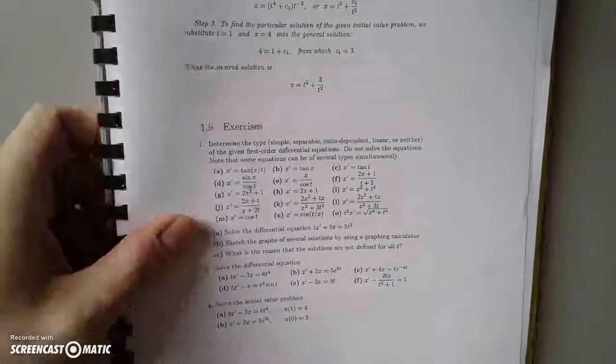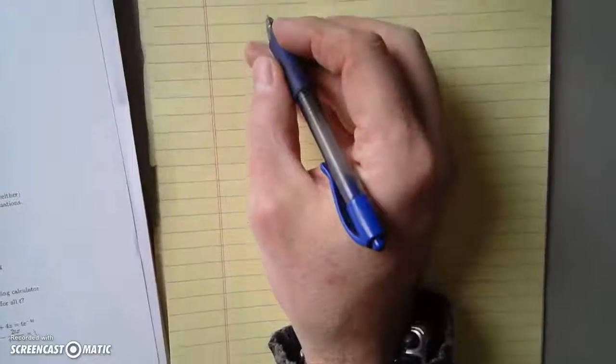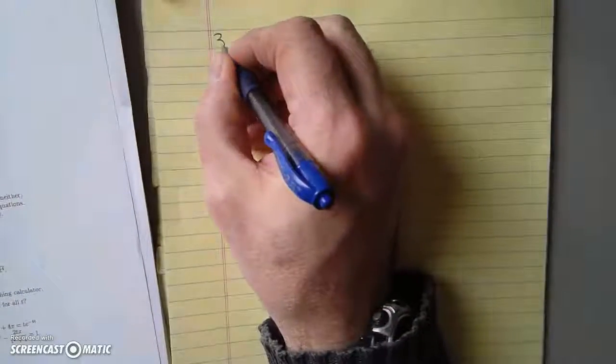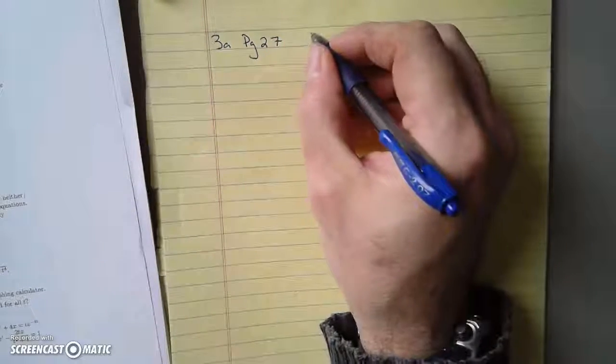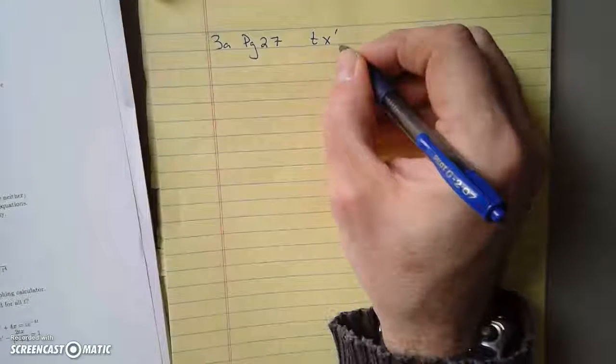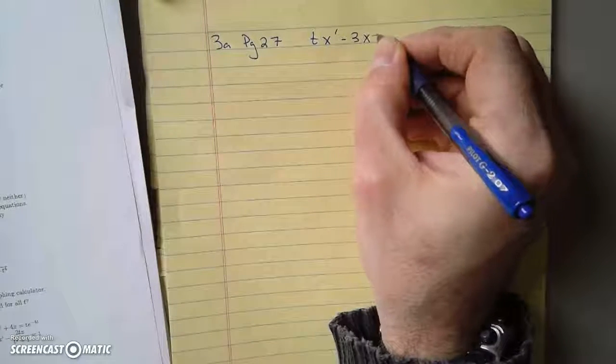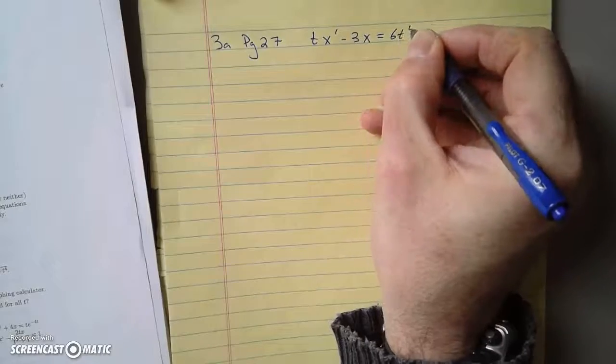So we'll do, say, a first. So this is 3a. This is page 27. It's tx' - 3x = 6t^4.